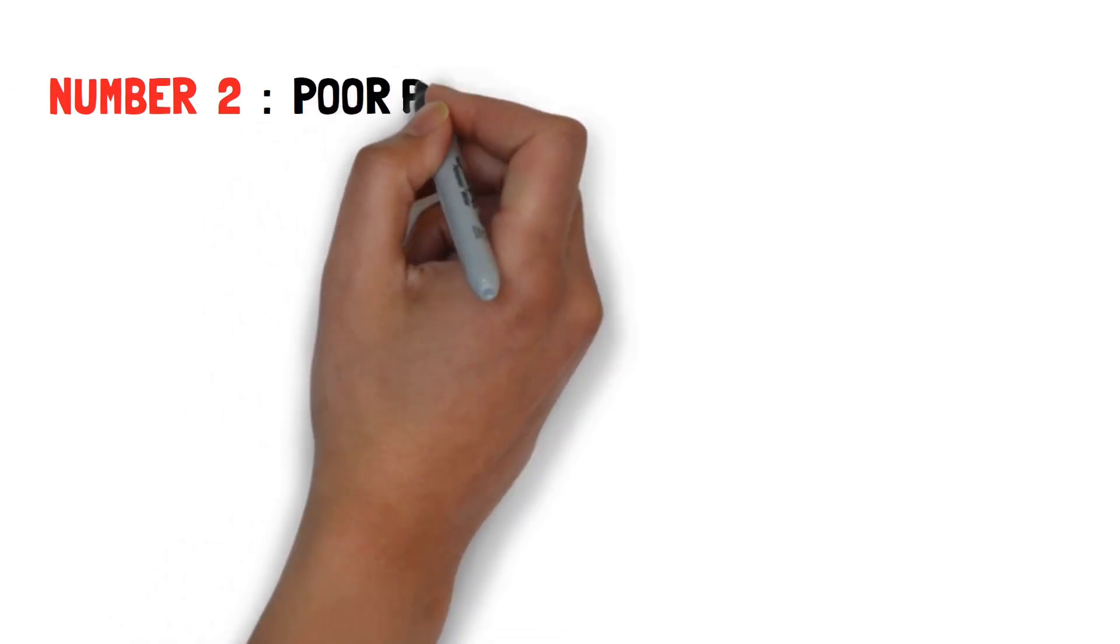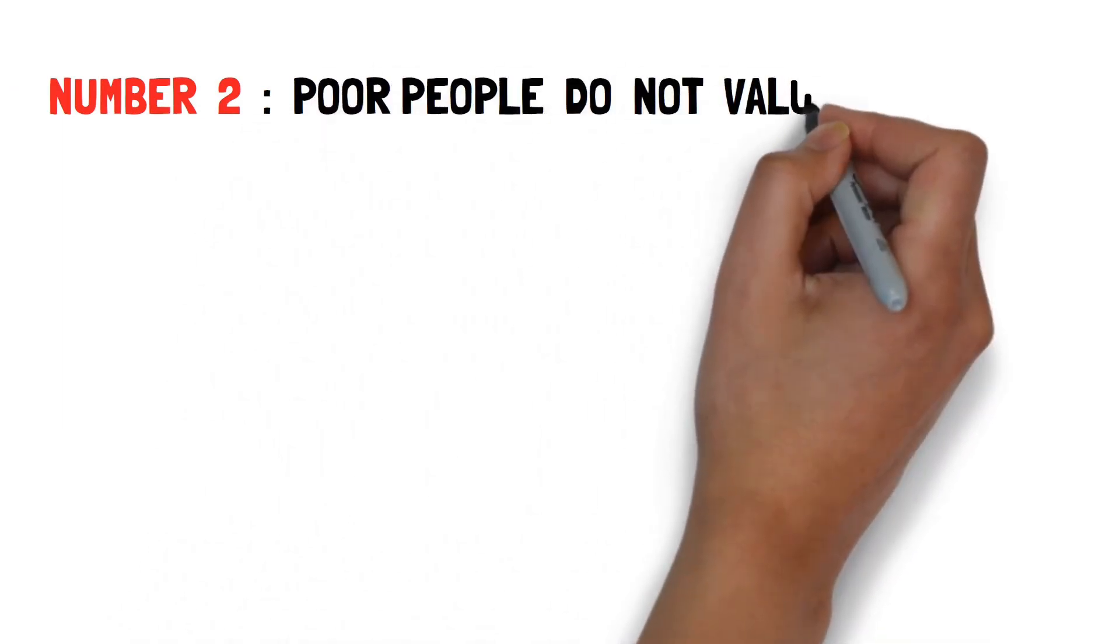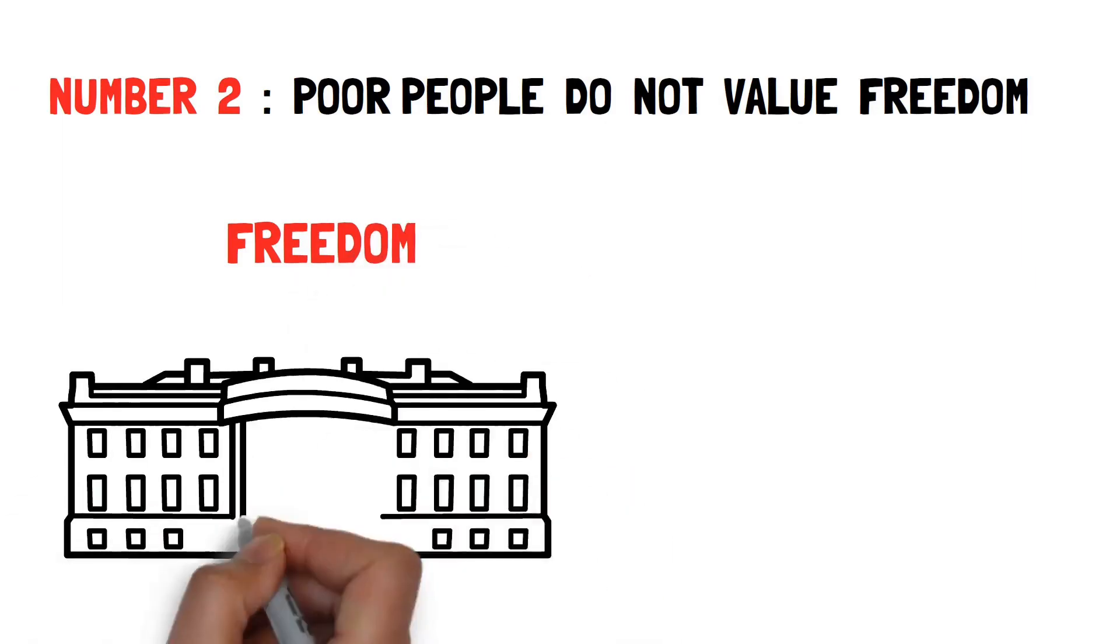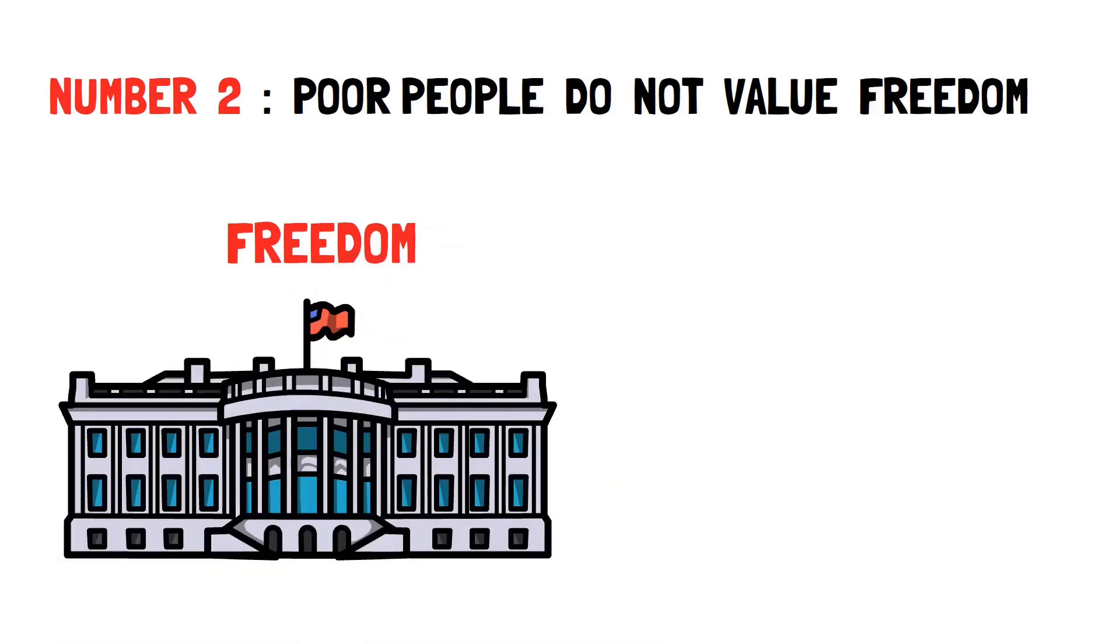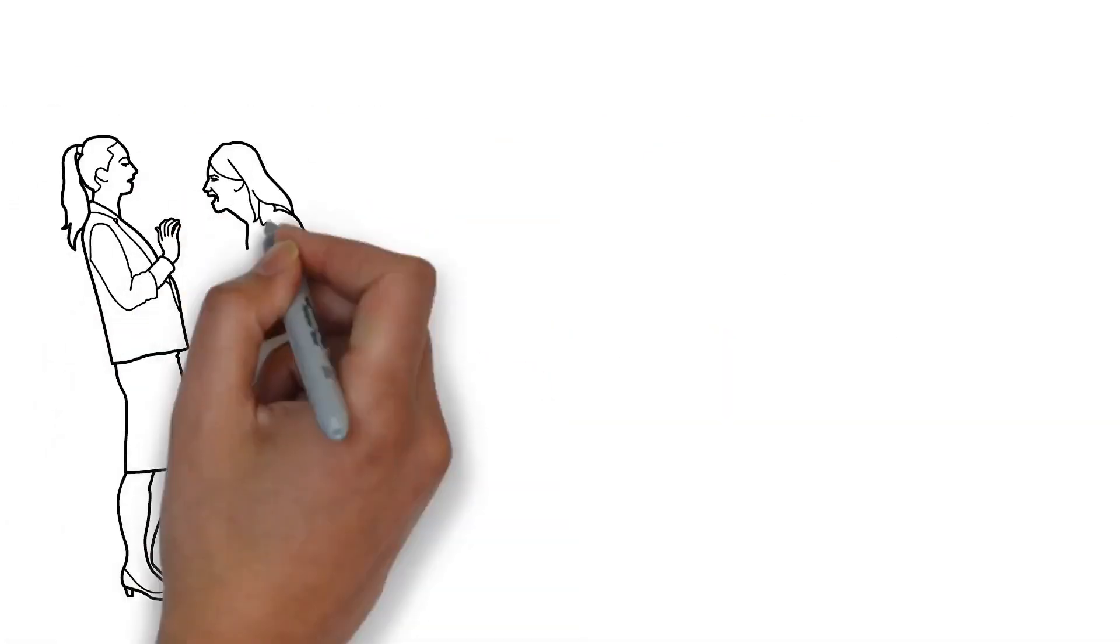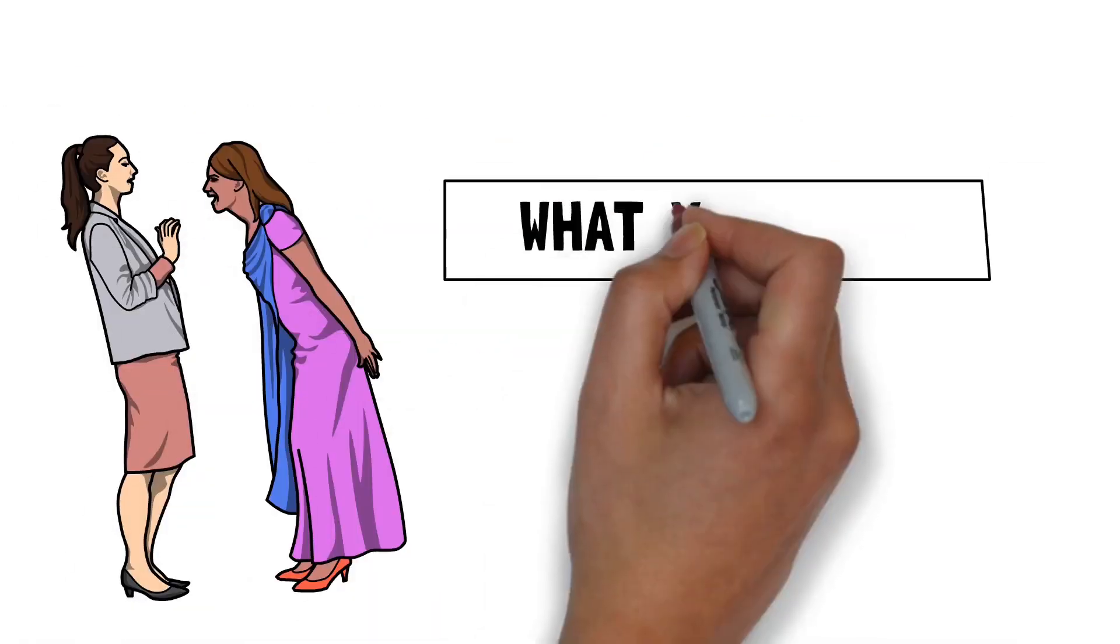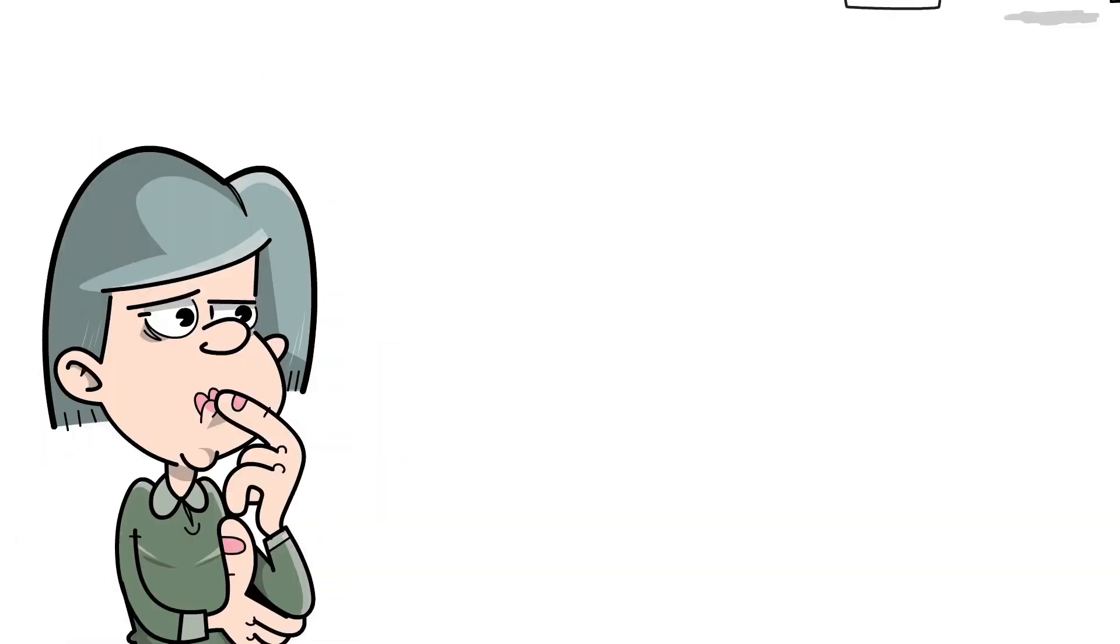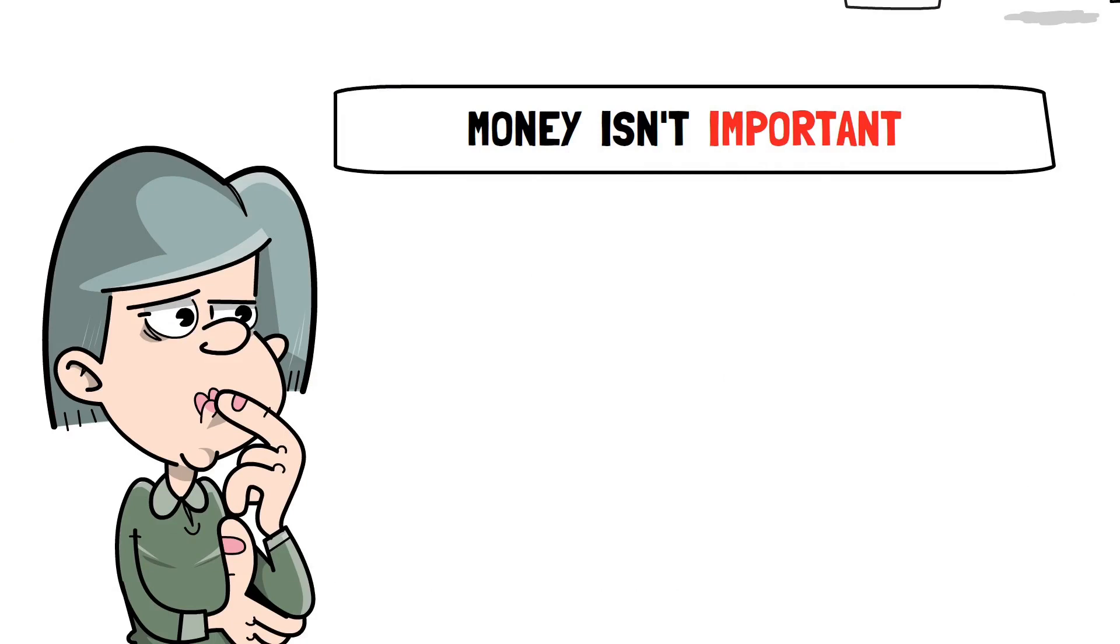Number 2. Poor people do not value freedom. When I mention freedom I don't mean whether or not you live in a democracy. Freedom means living the life that you want and not the one that someone else wants you to live. Doing what you want, how you want and where you want.